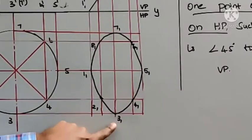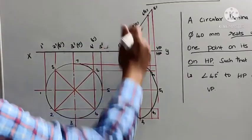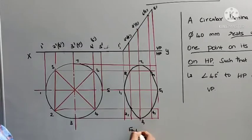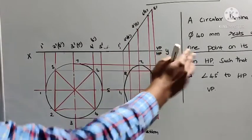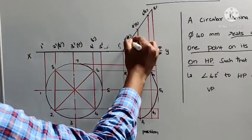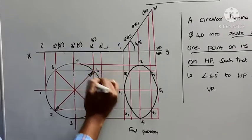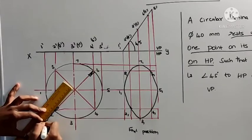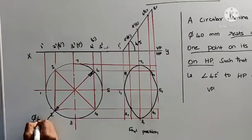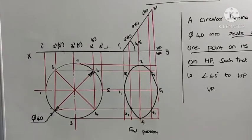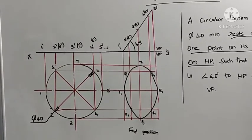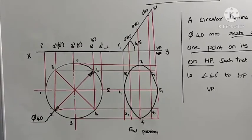This will be the final top view, and this will be the final front view. This is called the simple portion, and this one is called the final portion. Next, we need to dimension — the things given in the question are the diameter and the inclination angle. The inclination will be visible only in the front view, so we mention 45 degrees here. The diameter will be visible in the simple portion, not in the final portion — so we mark diameter 40. This is how we draw the projection of planes when the true shape is not visible in the front view or top view, using the change of position method. Thank you.